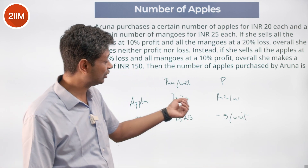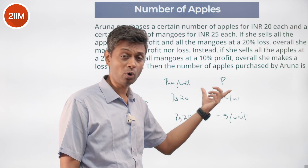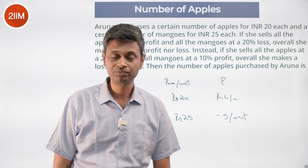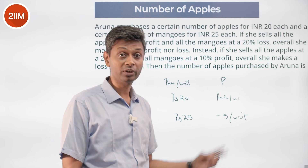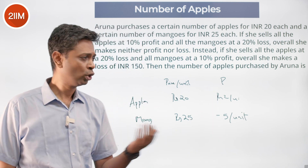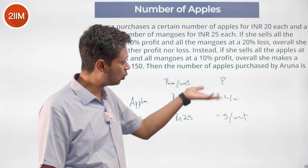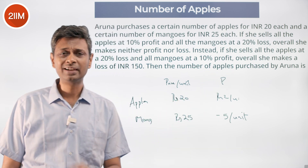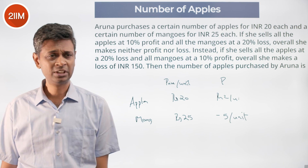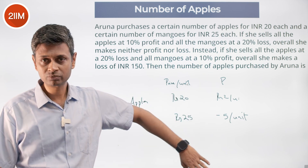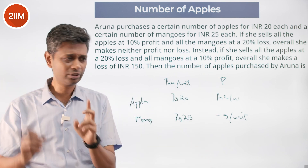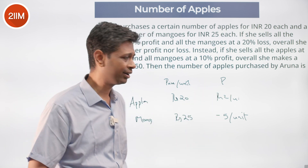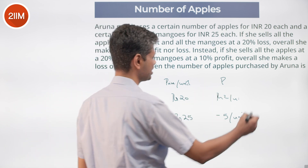Since she makes no profit and no loss, the profit from all the apples offsets the loss from all the mangoes. She makes ₹2 profit per apple and ₹5 loss per mango. So the ratio of apples to mangoes must be 5 is to 2.